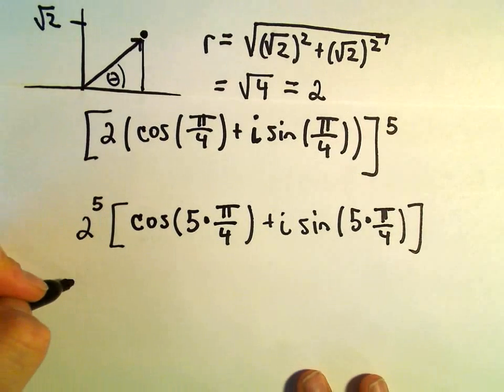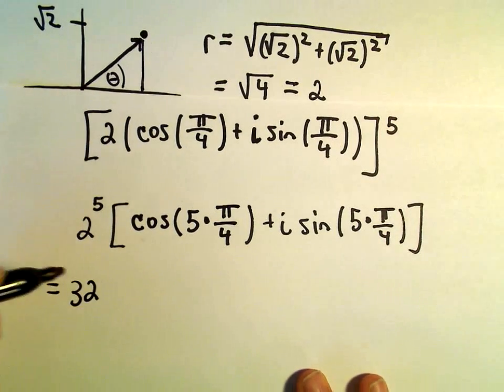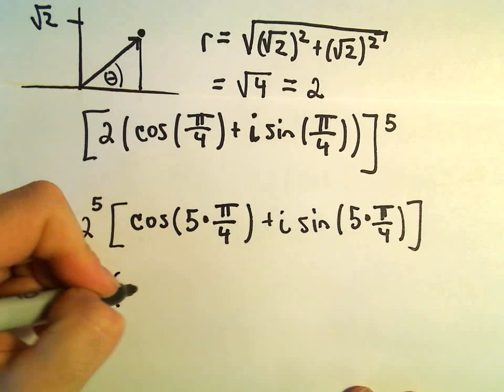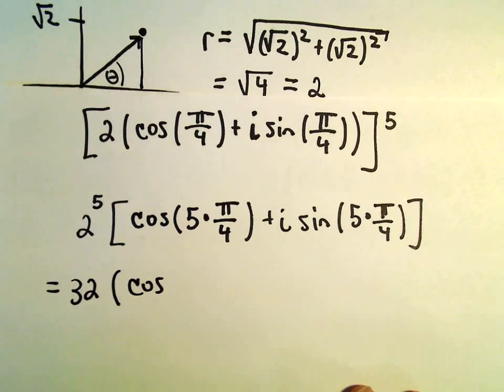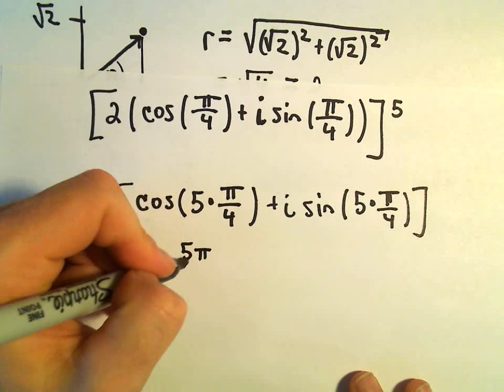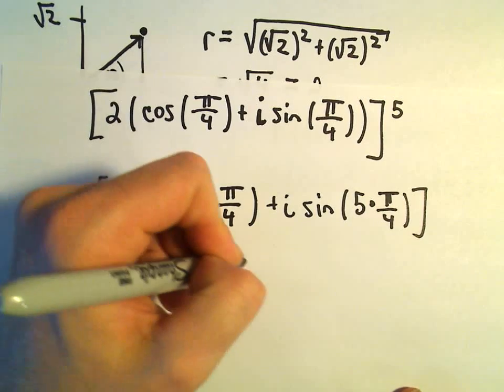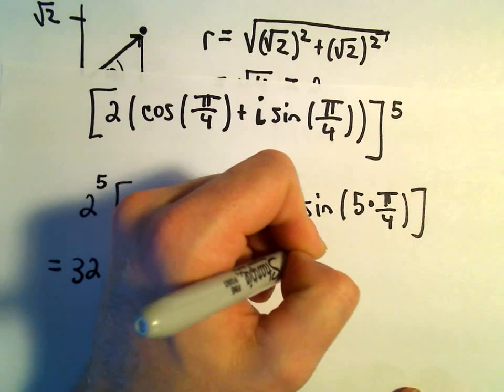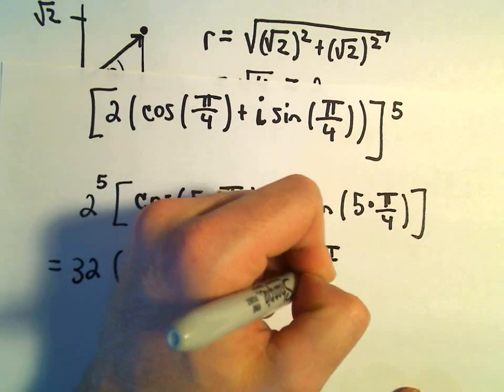Let's see here. So 2 to the fifth, I believe that is 32. We'll get cosine of 5π/4 plus i sine of 5π/4.